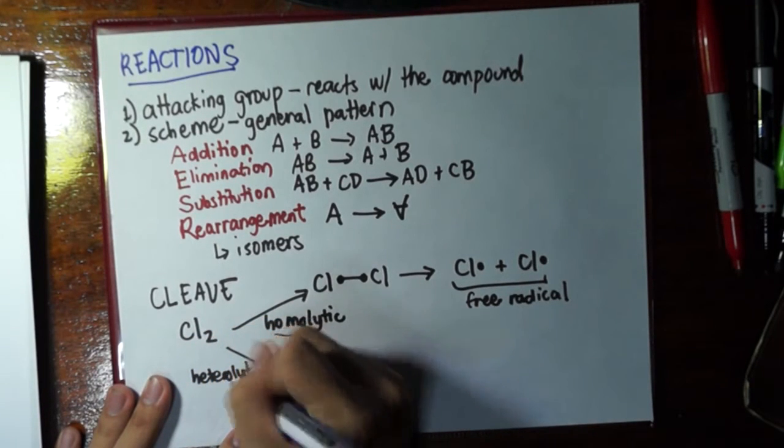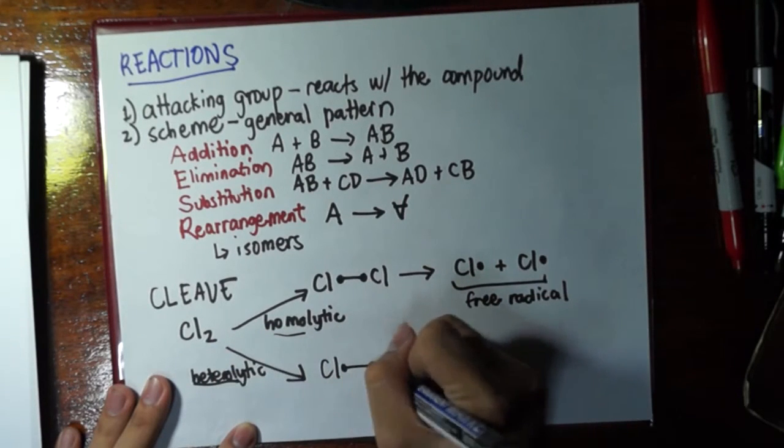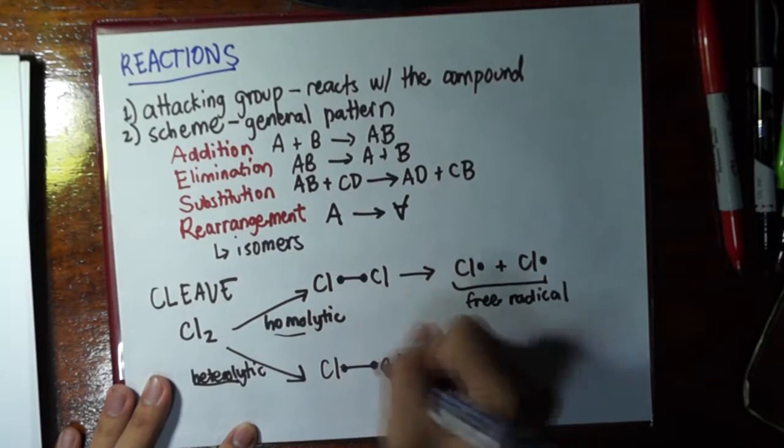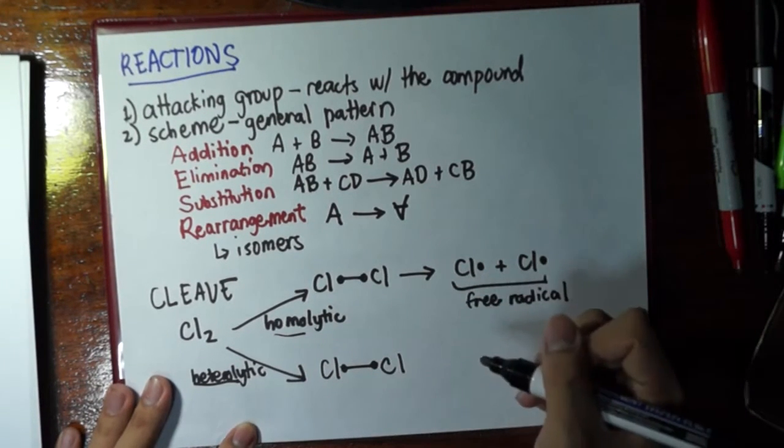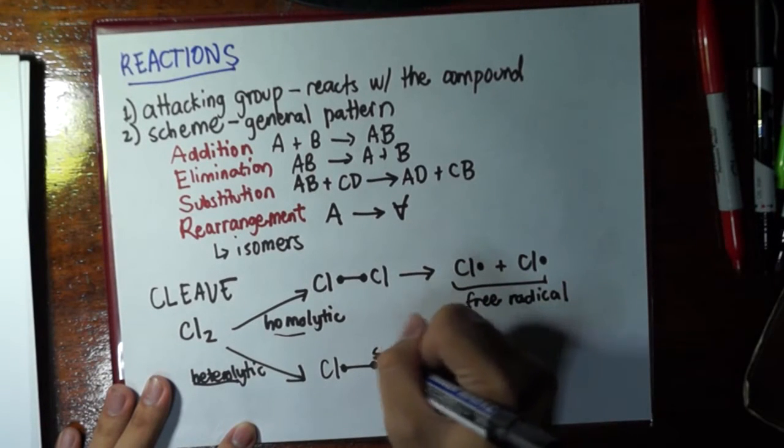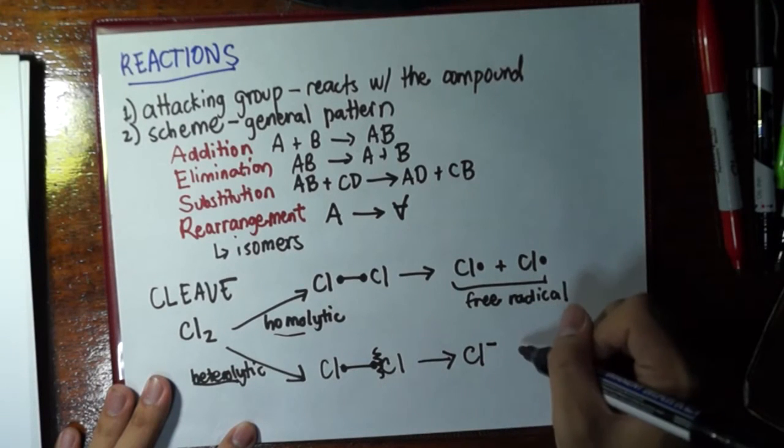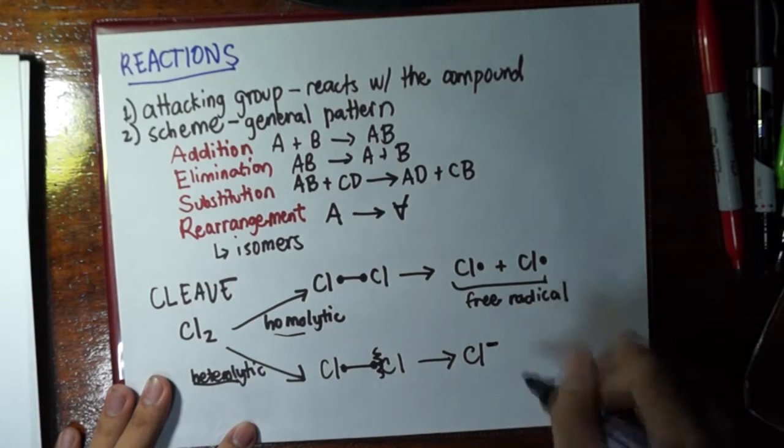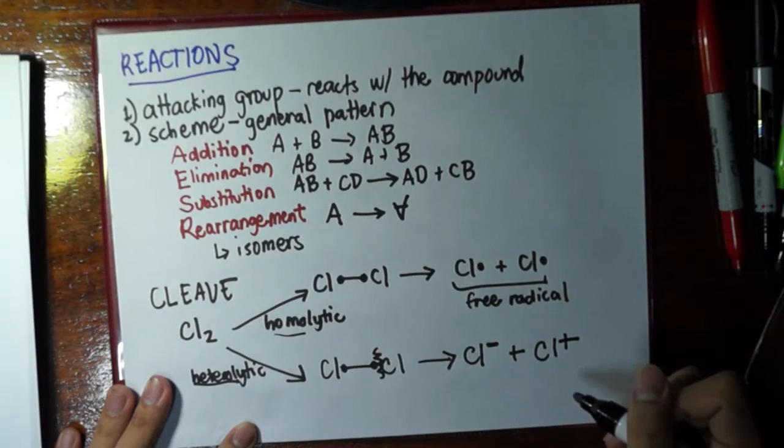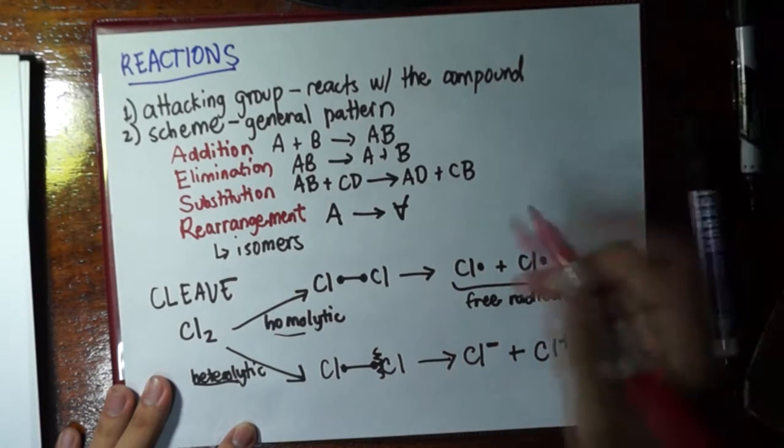Heterolytic means there's a difference or there is an imbalance in the cleavage. For example, this one, one of the chlorines will get both electrons and one of them will not get any. So, it's as if we broke it in this manner. One of them would get both, having a full negative charge, and one of them will have none, having a positive charge.